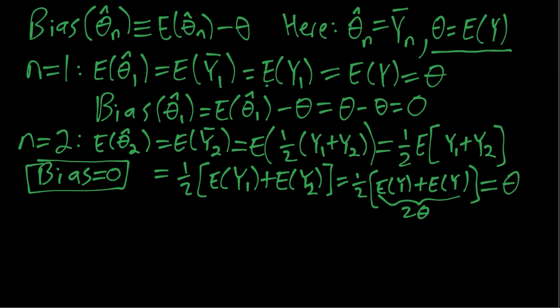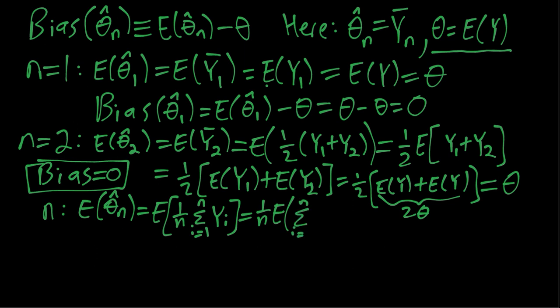And you can generalize this even further. If you have a general n, again this is extra credit if you want to try to follow this. So if we have a general n and we write out the general formula for the sample average, the linearity property of the expectation operator lets us first take the one over n out, and then it lets us turn this mean of sums into a sum of means.